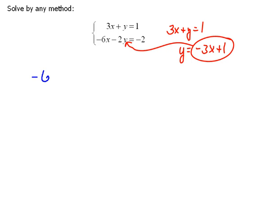So now I can say negative 6x minus 2 times, instead of y, I'm going to use negative 3x plus 1. I'm substituting that in for y equals negative 2. And now we need to distribute, so this will be negative 6x plus 6x minus 2 equals negative 2.